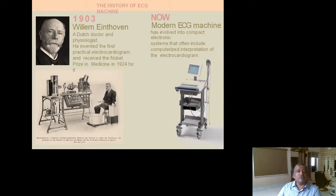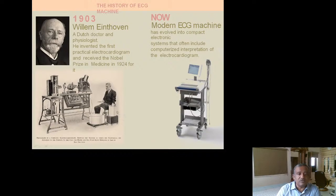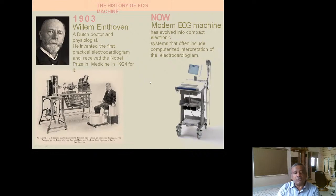Willem Einthoven, a Dutch doctor and physiologist, invented the first practical electrocardiogram in 1903 and received the Nobel Prize for it in 1924. Looking at his original device, there were huge electrodes — drums where the patient had to place their limbs — and electrical activity was recorded on plates using light waves. The modern ECG machine has evolved into a compact electronic system that often includes computerized interpretation and reporting.